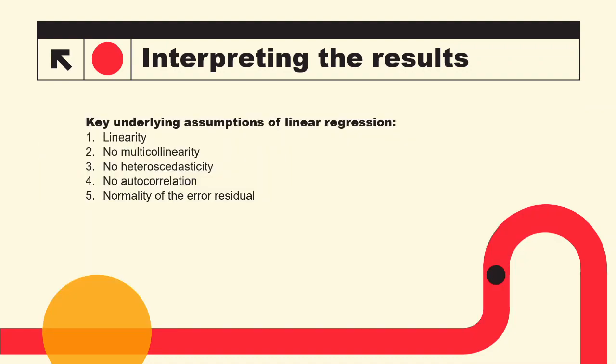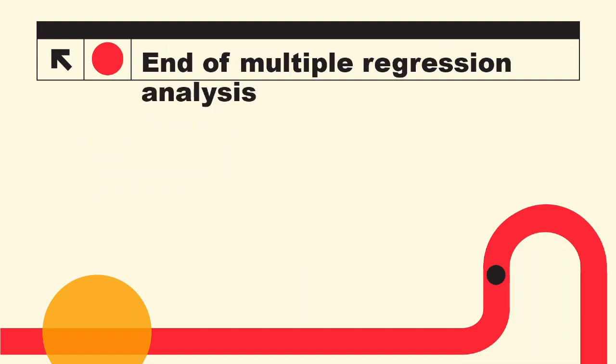Remember the underlying assumptions for linear regression: first, linearity — the independent variables should have a linear relationship with the dependent variable; second, no multicollinearity — the independent variables should not be related to each other; third, no heteroscedasticity — the variance of the residuals should remain constant; fourth, errors should not be correlated with each other; and finally, the error residuals must be normally distributed. That brings us to the end of our first video in the Digital Acumen series. See you next time.